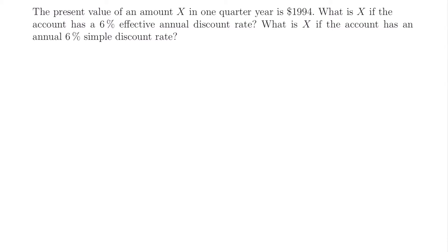Welcome back. Let's start with this example. We have the present value of an amount X in one quarter year is $1,994. What is X if the account has a 6% effective annual discount rate? What is X if the account has an annual 6% simple discount rate? So here we have two different scenarios where we're going to use two different types of discount rates — the first is an effective annual discount rate and the second is an annual simple discount rate. Let's do one at a time and start with the effective annual discount rate.